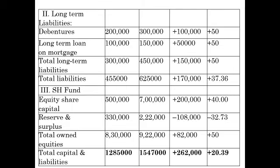For long-term liabilities, there are two components — debentures and long-term loan. Debentures increased from 2 lakh to 3 lakh, an increase of 1 lakh. In terms of percentage: 1 lakh divided by 2 lakh multiplied by 100 gives 50 percent. Long-term loan increased from 1 lakh to 1 lakh 50, also a 50 percent increase. Total long-term liabilities increased by 50 percent.